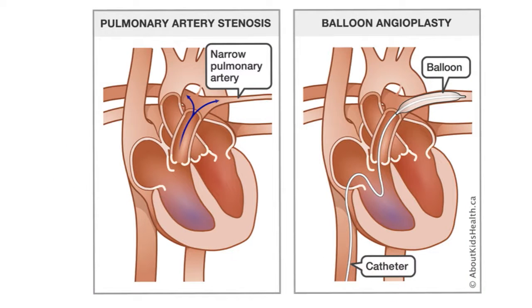Later stages may require a different type of intervention like a procedure known as balloon pulmonary angioplasty. In this procedure, a catheter with a guide wire is inserted into the artery through the neck or groin. It is guided by echocardiography to the site of the blockage, where a balloon is inflated and presses the blood clots to the walls of the arteries. This helps lower the blood pressure in the pulmonary area and overall improve heart function.